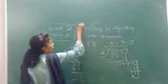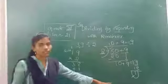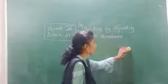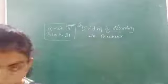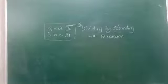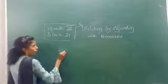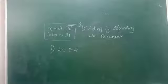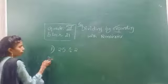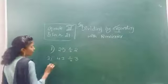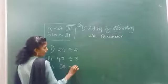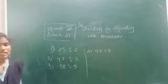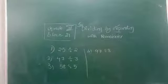This is about S4: dividing by expanding with remainder. Now I am going to give some problems to you. Everyone copy these problems in your math notebook and complete them using the expansion method. Which method should you use? Dividing by expanding only. The questions are: 25 divided by 2; 47 divided by 3; 58 divided by 5; and 97 divided by 8. These 4 questions you have to complete in your math notebook and send your answers through WhatsApp.